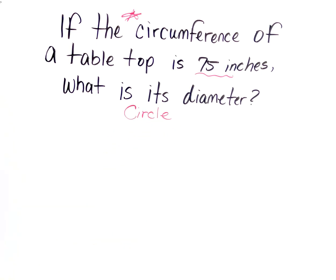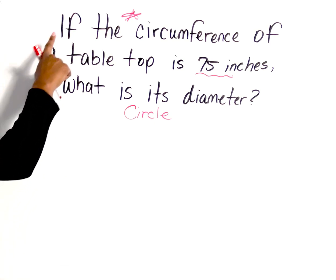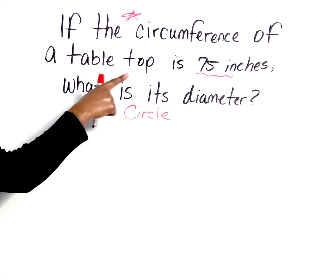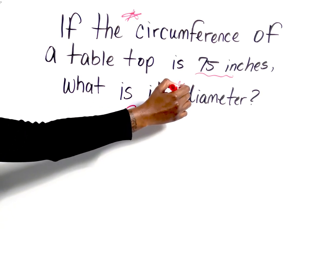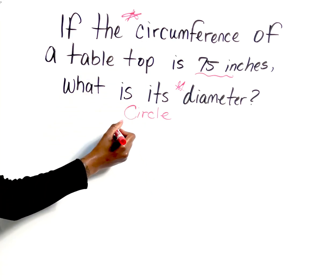So the second thing we need to do is figure out what formula we need to apply. We look at our question again: if the circumference of a tabletop is 75 inches, what is its diameter? So we know we're looking for the diameter. They give us the circumference, so we're going to use the formula for circumference.